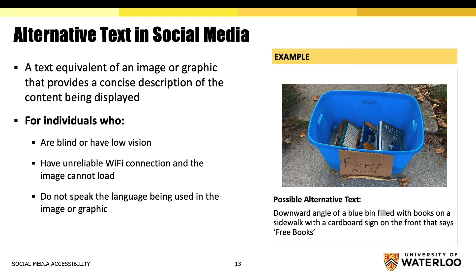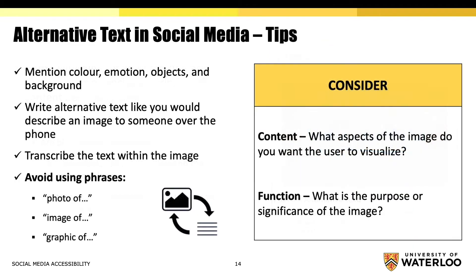Alternative text is an important step to create accessible visual content. An alternative text is a concise description of the content in an image or graphic. For example, a possible alternative text for the image on the right could be: 'downward angle of a blue bin filled with books on the sidewalk with a cardboard sign on the front that says free books.' Adding alternative text is extremely helpful for individuals who are blind or have low vision, those who have unreliable wi-fi connection, those who do not understand the language used in the post, and many more. While creating alternative text, it is helpful to write them as if you were describing the image to someone on the phone, and remember to avoid phrases that could be redundant. It may also be useful to think about the content and function of the image or graphic — ask yourself what aspects you would want the user to visualize, and what is the purpose of the image.